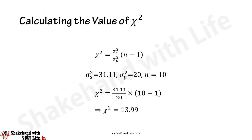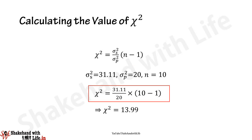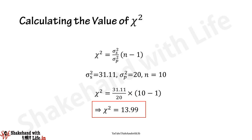Now we calculate the value of chi-square using the test statistic: χ² = (σ_s² / σ_p²) × (n − 1). Substituting the values of sample variance σ_s², population variance σ_p², and n into this equation, the calculated value of chi-square comes out as 13.99.